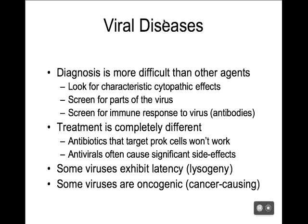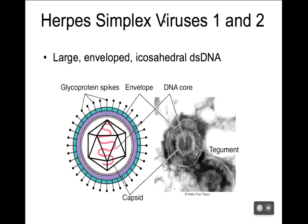Let's look at an example of a viral pathogen — the herpes simplex viruses 1 and 2. The Herpesviridae family has many human pathogens. Herpes simplex viruses 1 and 2 are relatively large viruses. Identifying their structure: they are double-stranded DNA viruses, with an icosahedral capsid, and they are enveloped. So herpes simplex virus 1 and 2 are large, enveloped, icosahedral viruses with double-stranded DNA.